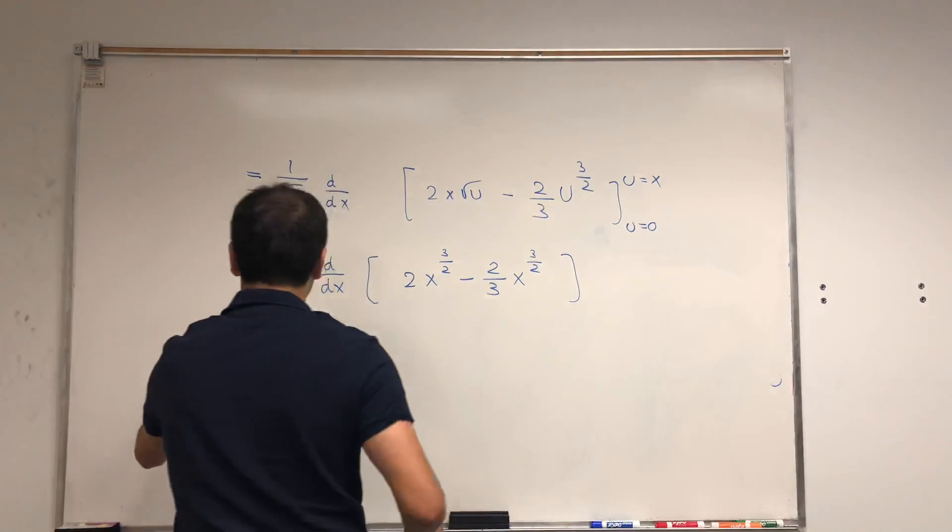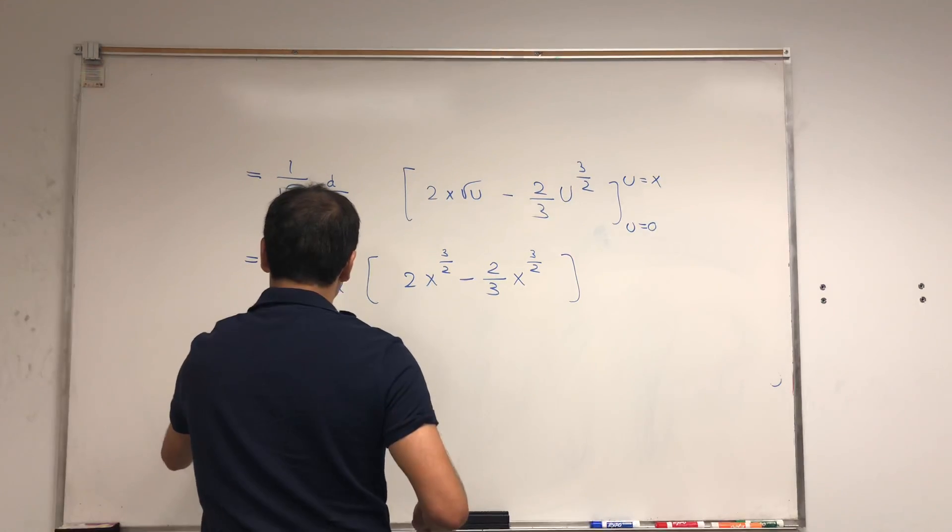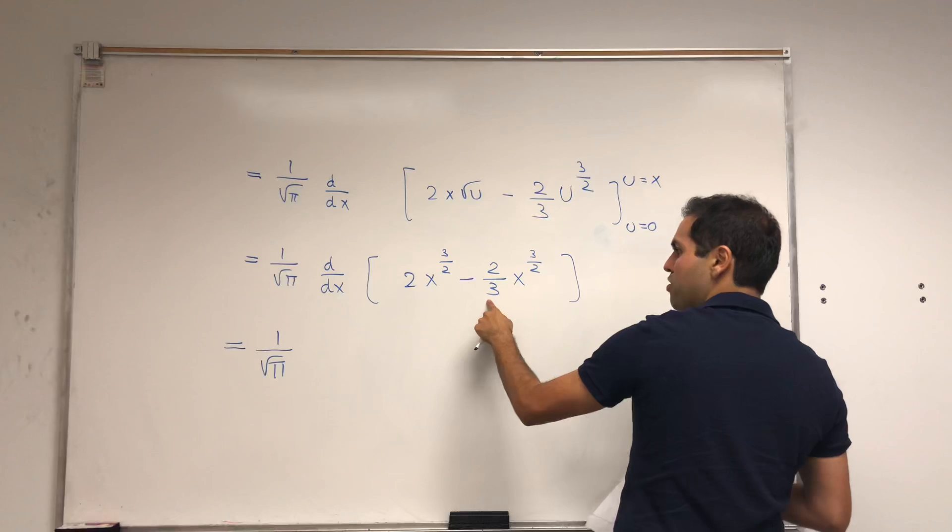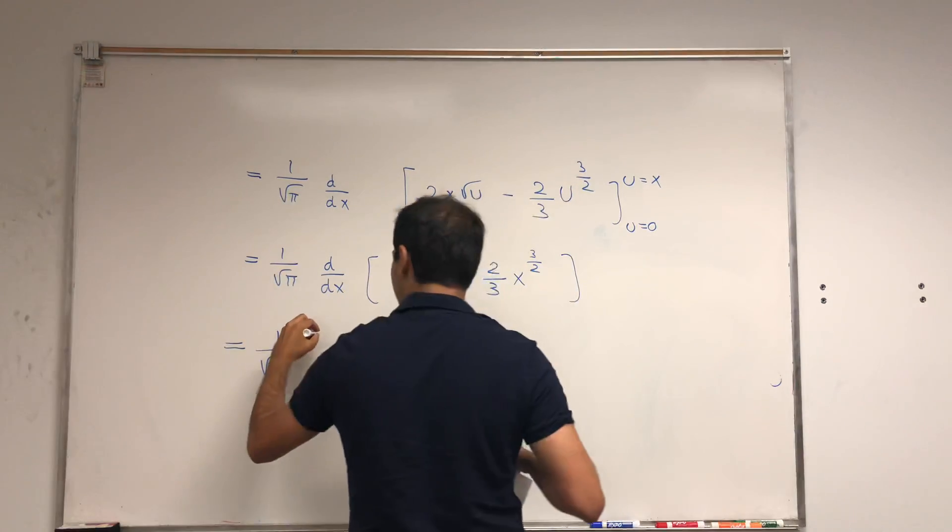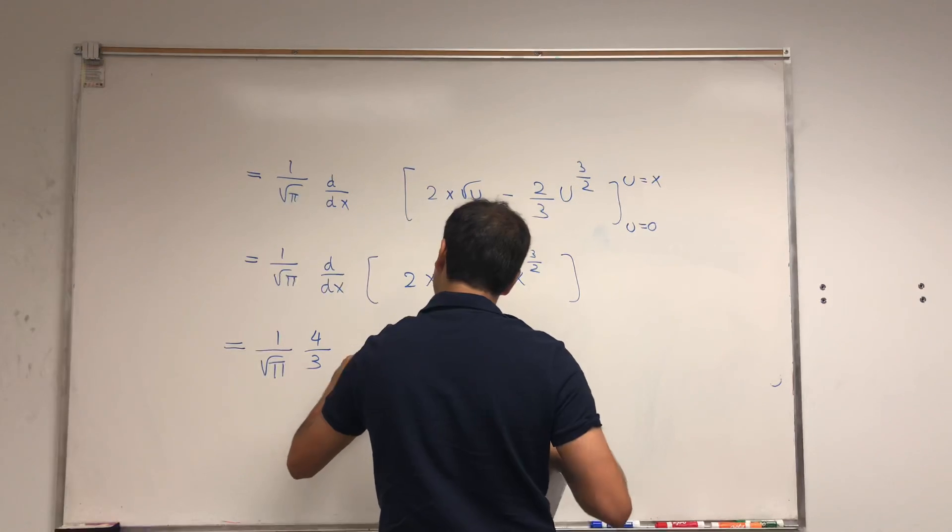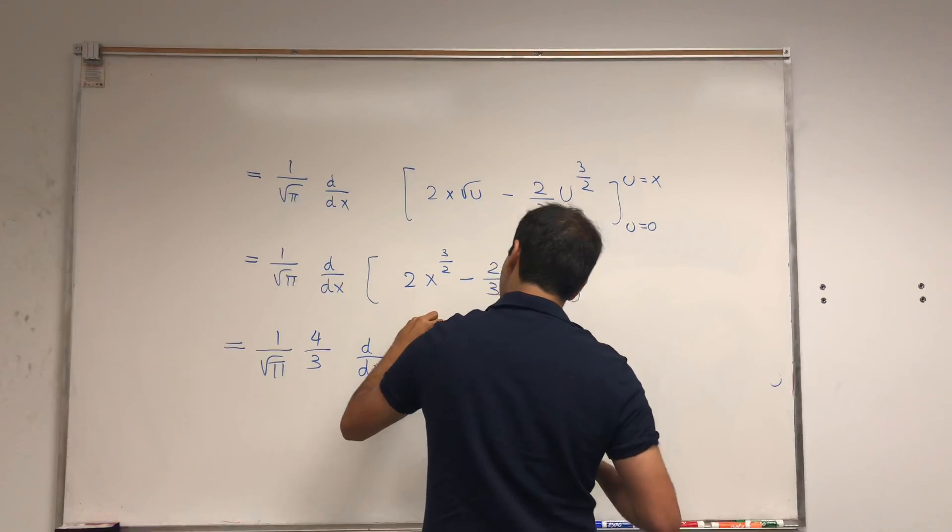And let's quickly simplify this. So it's one over square root of pi. Two minus two thirds, that's four thirds. So let's just pull it out. Four thirds, d over dx, x to the three halves.